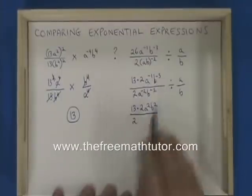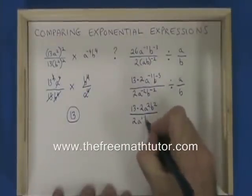The a to the negative 1 and b to the negative 3 move to the bottom, where I have a to the 1, b to the 3.